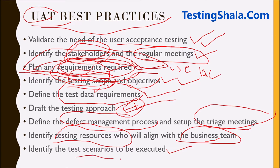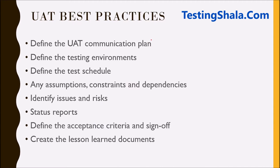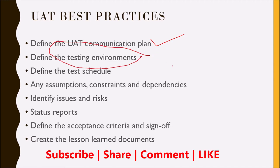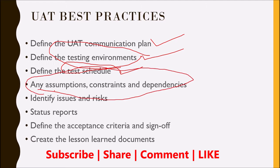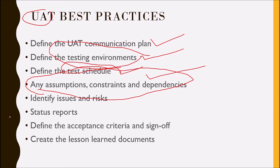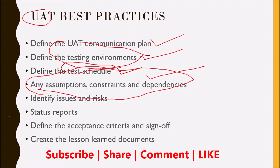The next thing we should look into is the test scenarios to be executed. We should also come up with the right communication plan — which we already discussed — to have regular connect with the stakeholders. We should define the test environments where UAT is going to be performed. We should also clearly define the test schedule. Additionally, we should document any assumptions, constraints, or dependencies for the business users or end users so that we can work on solving those issues.